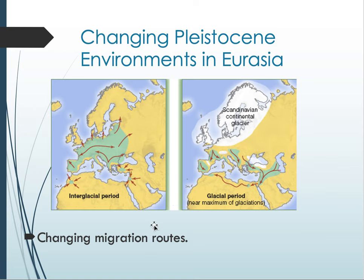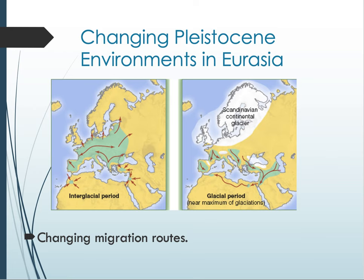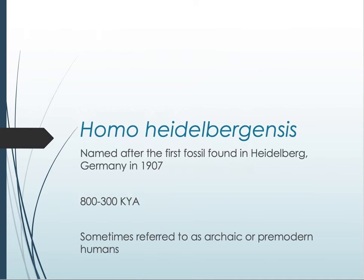This is what's happening in northern Europe as Homo heidelbergensis, or pre-modern humans, are traveling outside of Africa. Changing migration routes may mean that individuals who traveled outside of Africa and up into Europe got stuck there, and this isolation would allow speciation to occur over time. Homo heidelbergensis is named after the first fossil found in Heidelberg, Germany in 1907. Our oldest fossil samples are around 600,000 years old, but molecular evidence suggests the species must be older, with the most recent at 300,000 years ago.